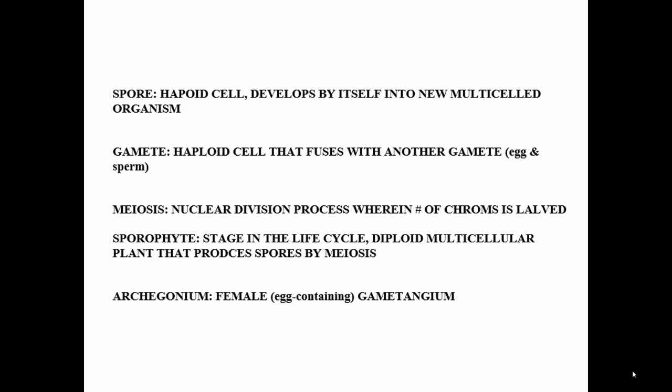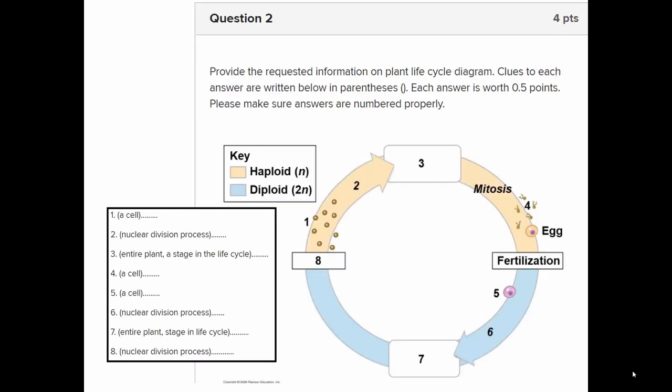By the way, gametophytes produce those gametes in gametangia, of which there are two types: a female archegonium and a male antheridium.